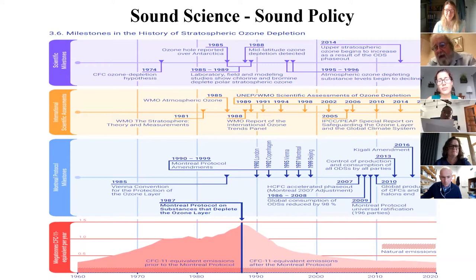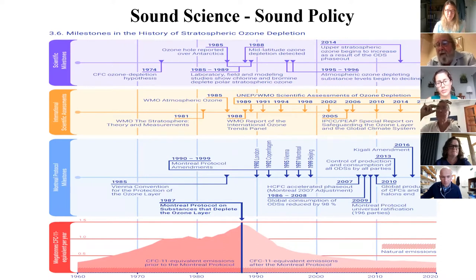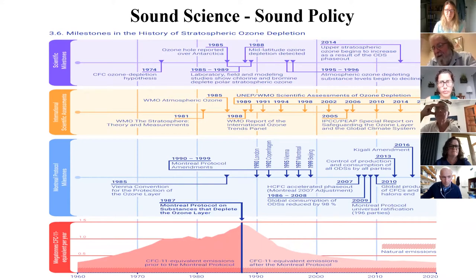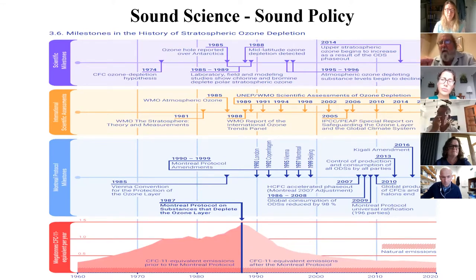On the policy side, the Vienna Convention was in 1985, the Montreal Protocol in 1987, followed by a series of amendments and adjustments. Long-lived and then short-lived chlorine and bromine species were banned. As a result, the atmospheric loading of chlorine declined significantly. This is probably the most successful example of science-policy integration — good research by academics leading to good international assessments, with close coordination between science and policy. The ozone layer is projected to recover by mid-century.